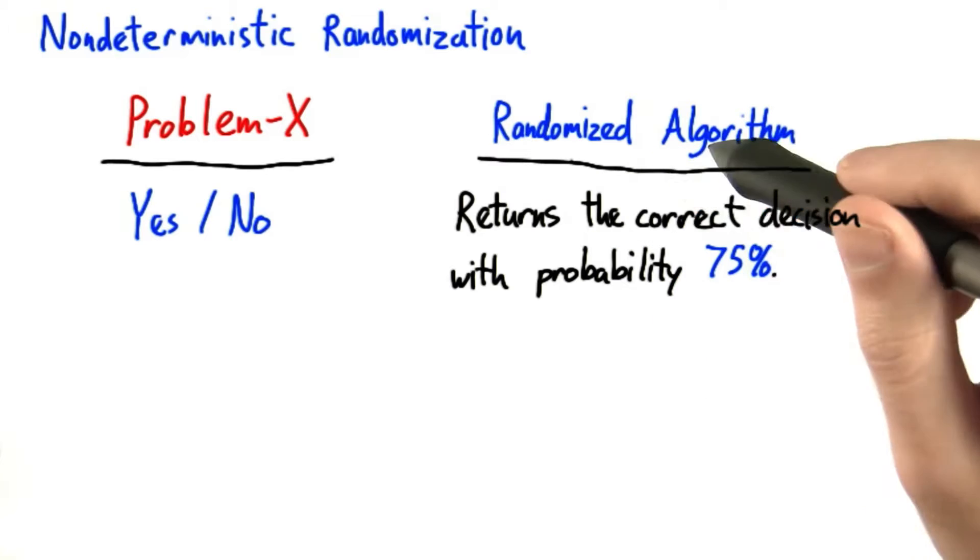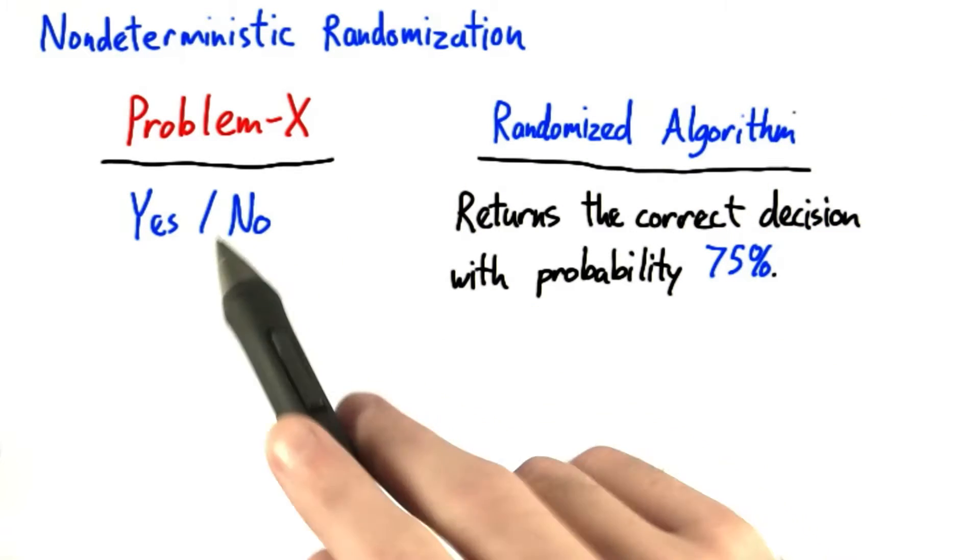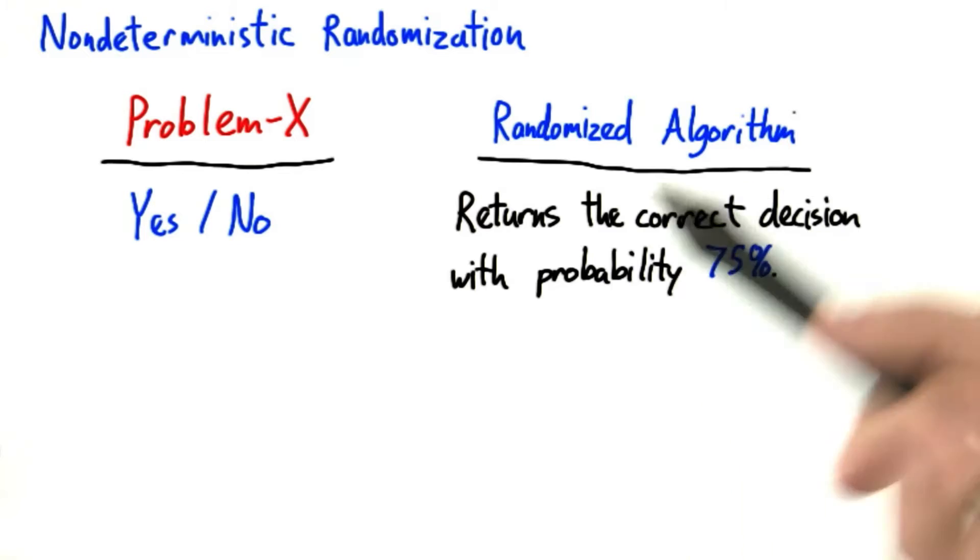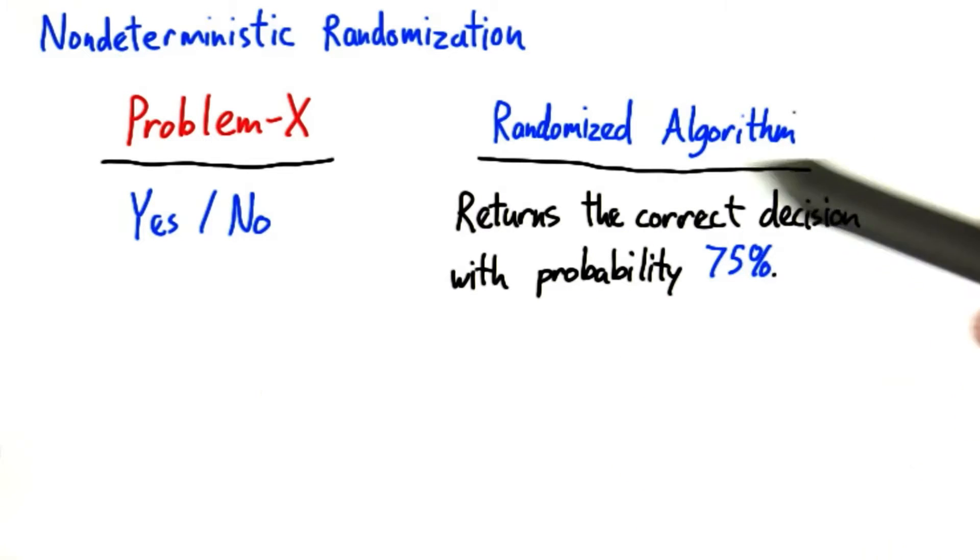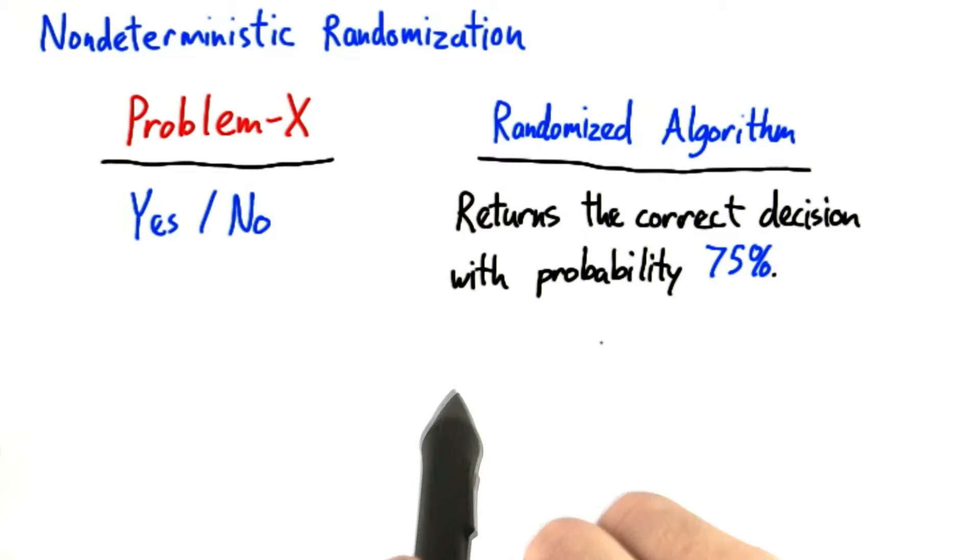Let's also say that we have figured out a randomized algorithm for this problem, and we know that the randomized algorithm returns the correct decision, yes or no, with a probability of 75%.